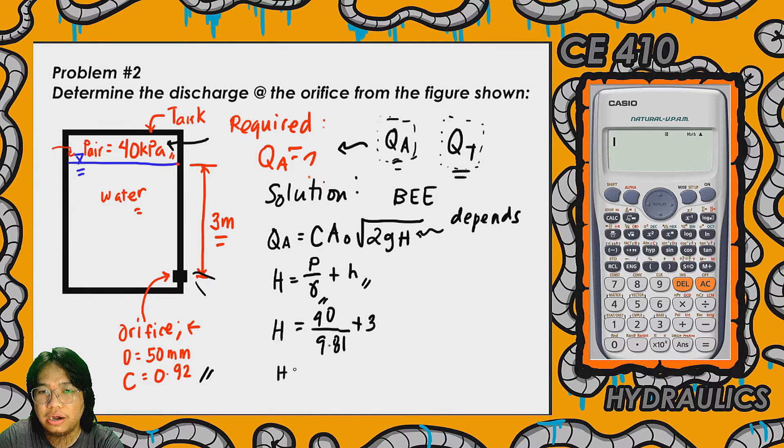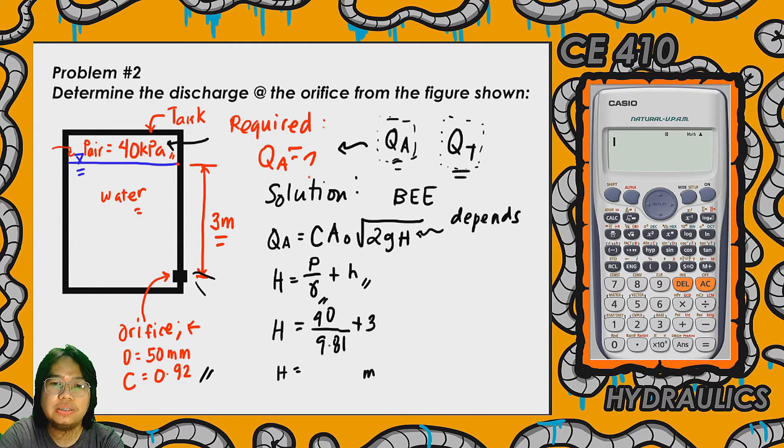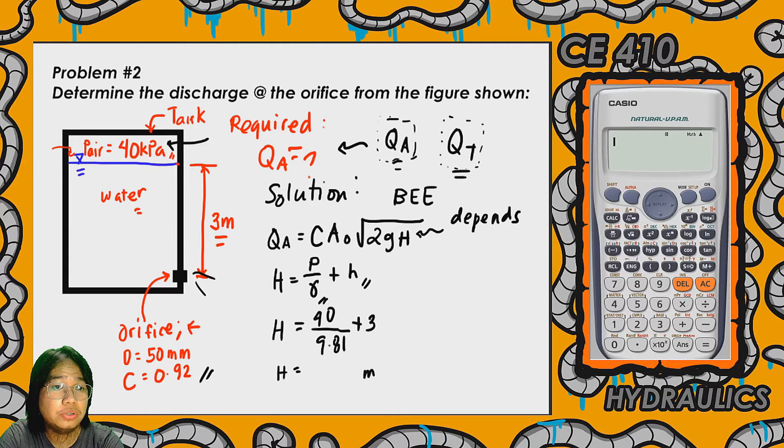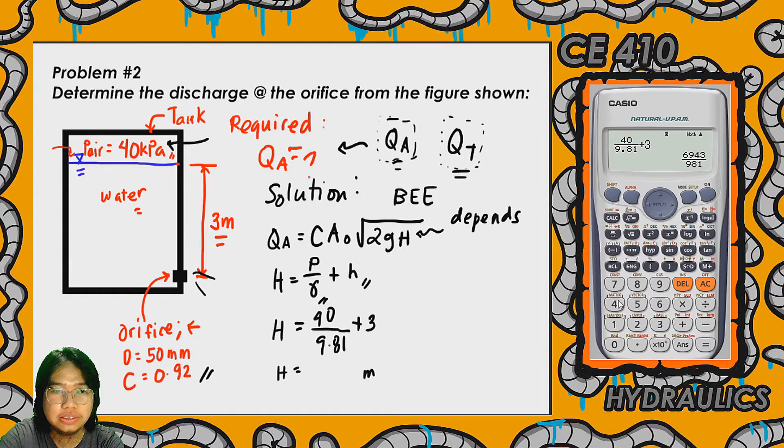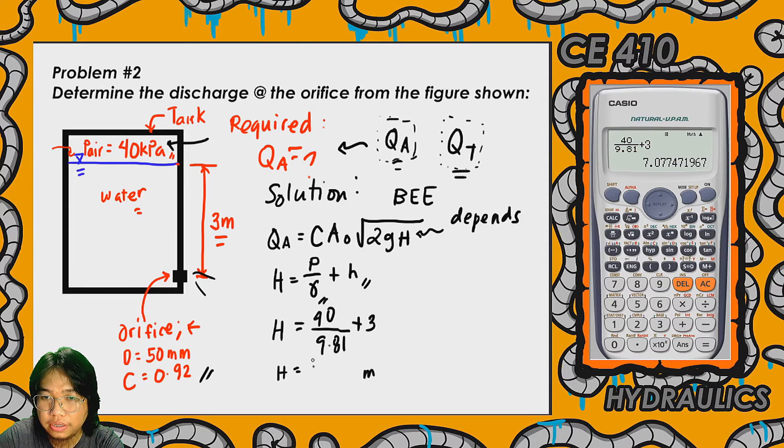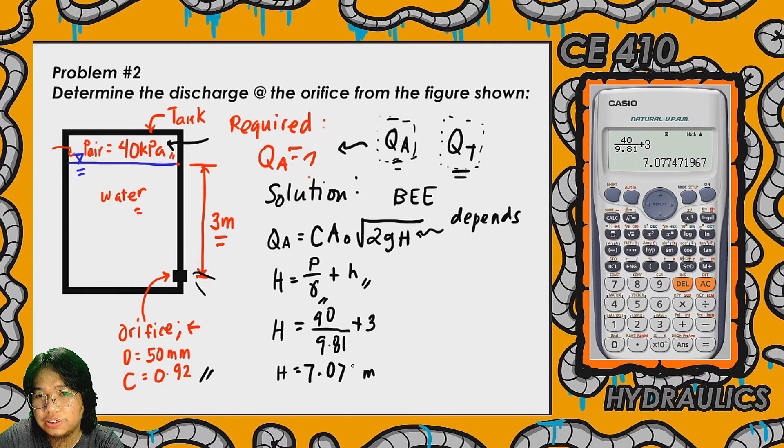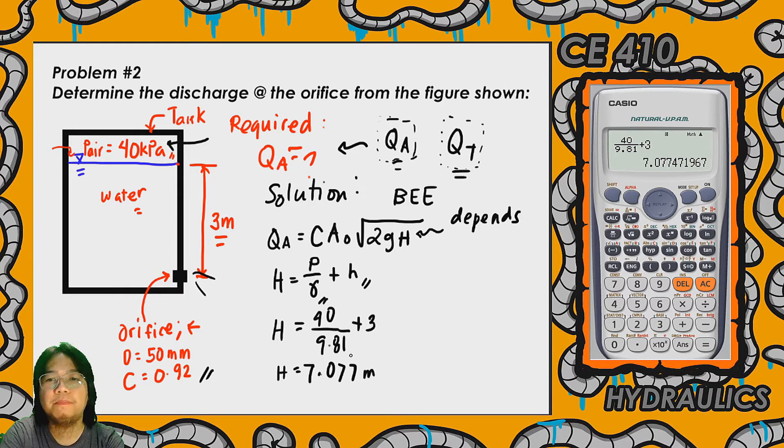So our answer would be in meters. Let's try to input that in the calculator, so that's 40 divided by 9.81 kilonewtons per cubic meter plus 3, so that's 7.077 meters.